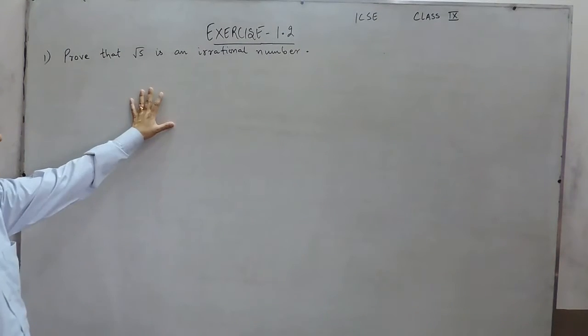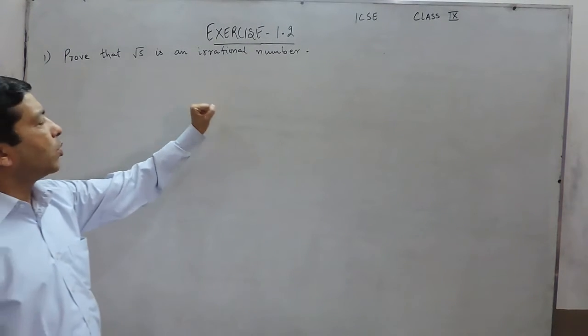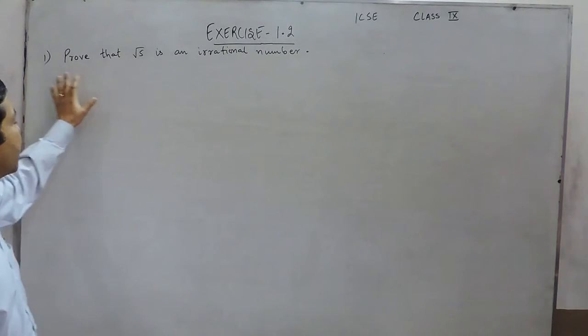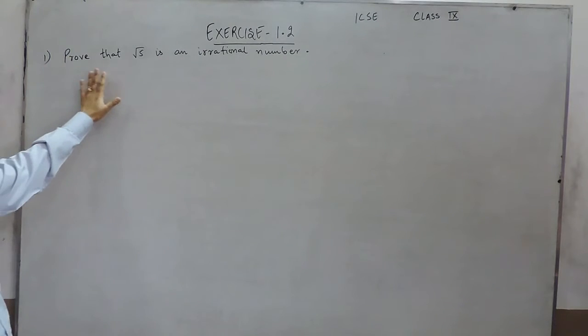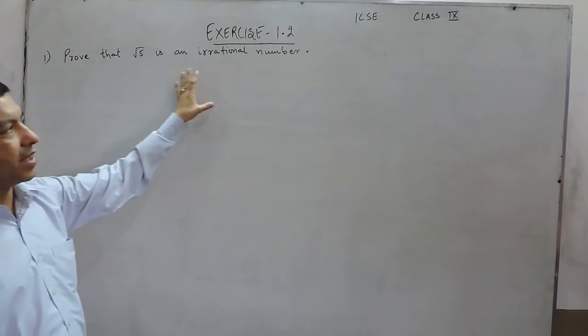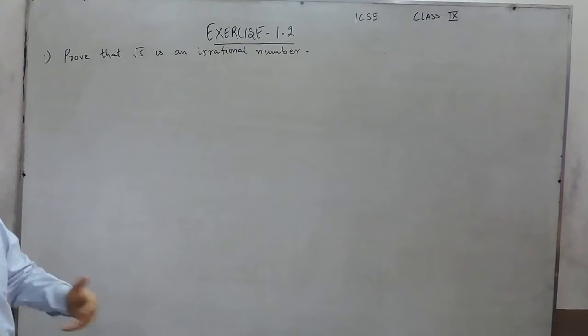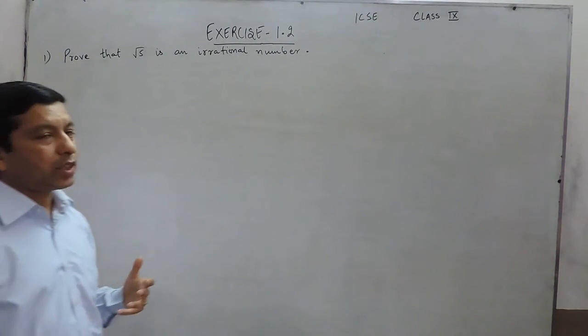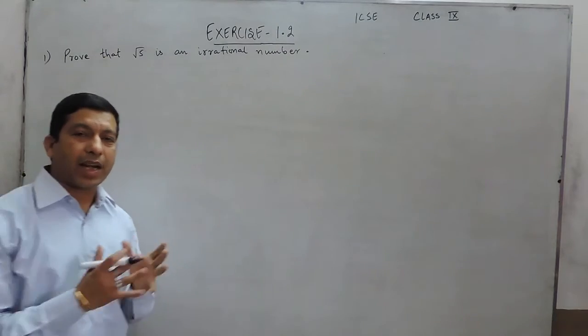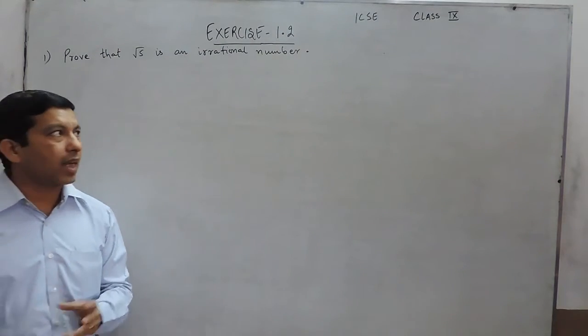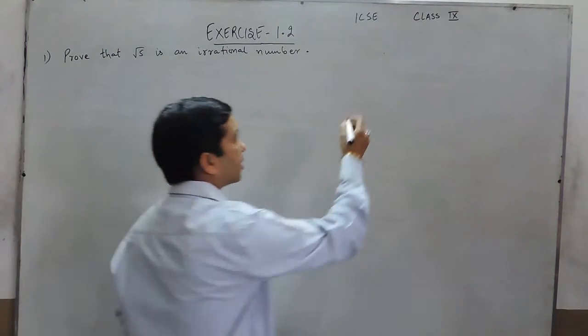Hello everyone. In exercise 1.2, the first question is: prove that under root 5 is an irrational number. First of all, we should know what rational numbers and irrational numbers are.